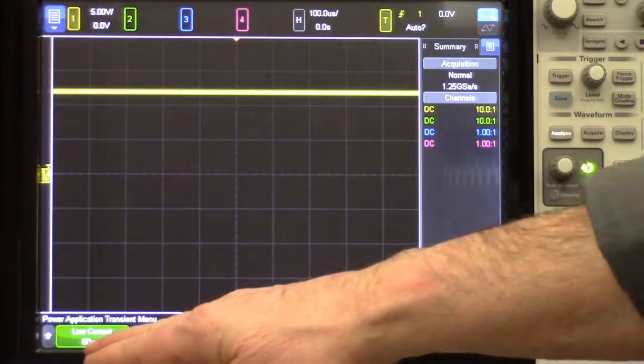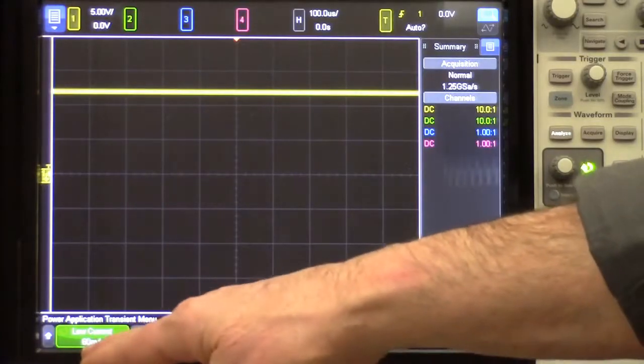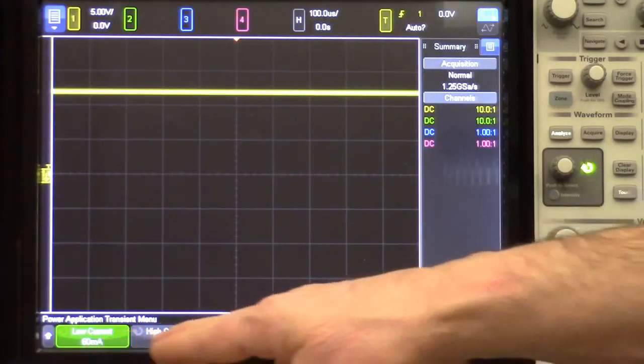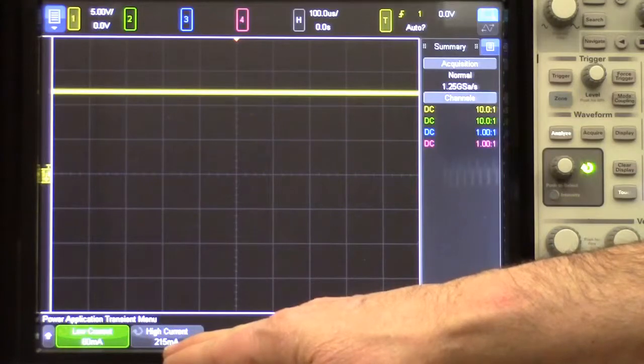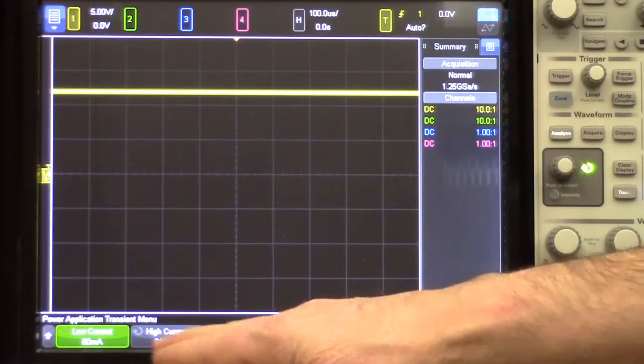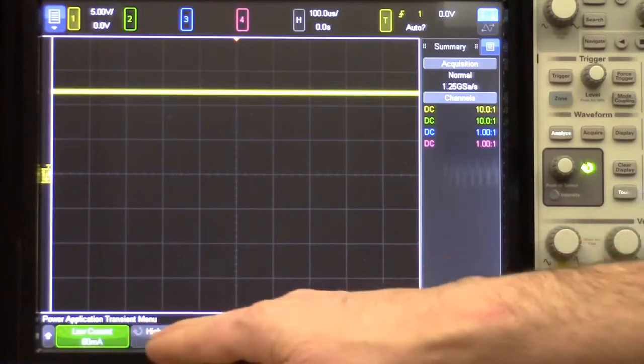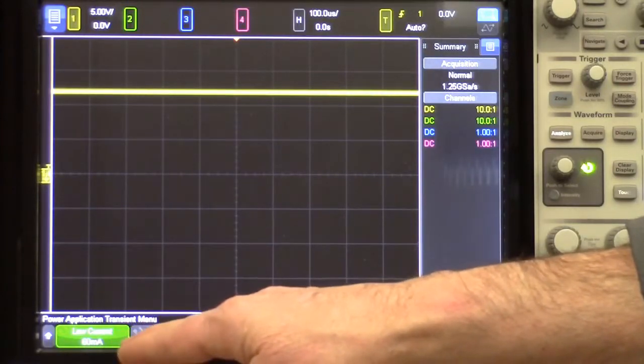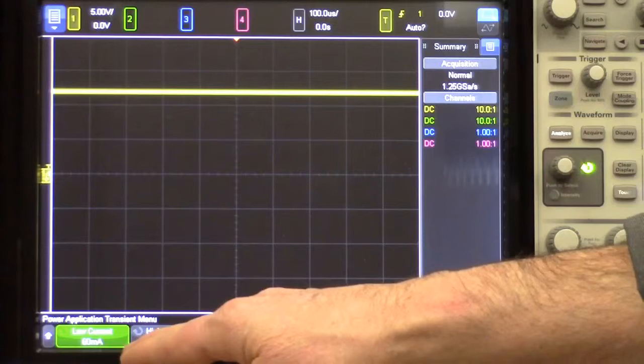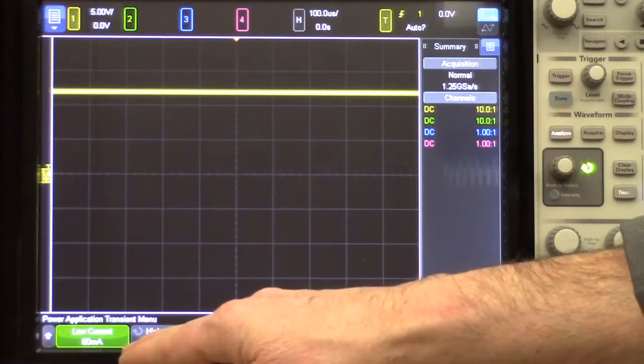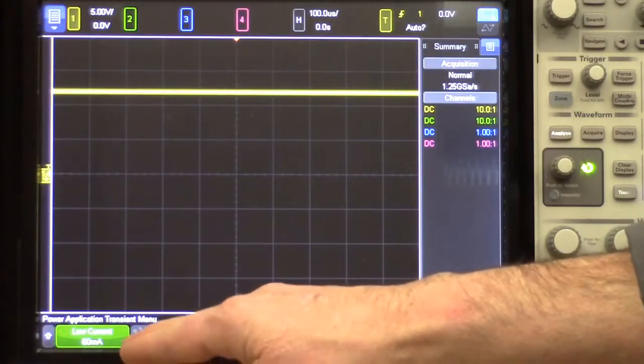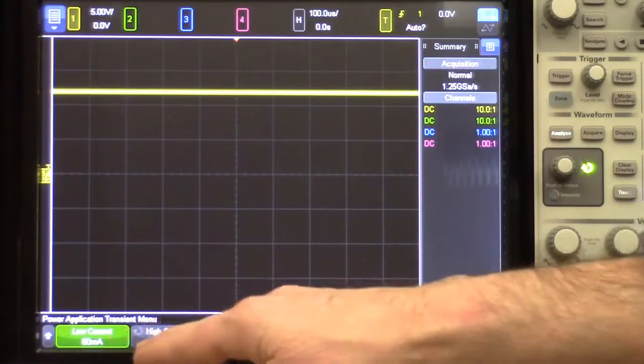We are going to alternate between a load that draws approximately 60 milliamps and a load that draws approximately 215 milliamps. Now, these settings are not that critical. The scope will use these values to set the trigger level on either edge so that it can trigger when it flips from one condition to the other. So it's going to set the trigger level in the mid-range of these two values.